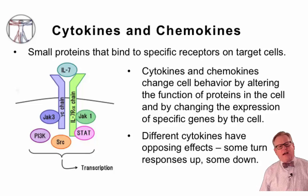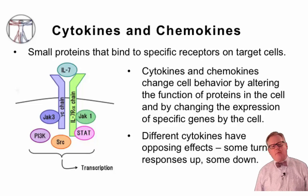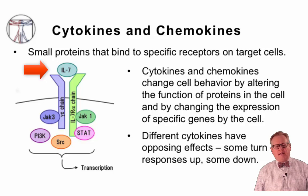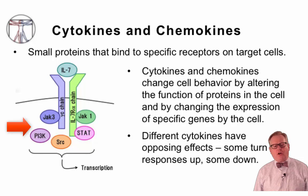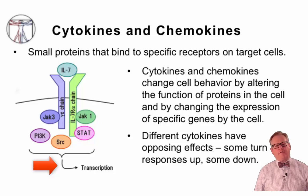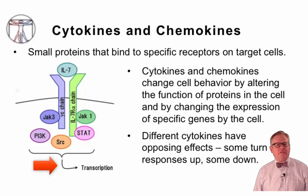What are cytokines and chemokines? These are small proteins that bind to specific receptors on target cells. As shown here to the left, the example of interleukin-7 binding to receptor chains in the membrane, sending signals to intracellular signaling molecules that ultimately lead to changes in gene transcription. This is how cytokines and chemokines work — they change cell behavior by altering the function of proteins in the cell and by changing the expression of specific genes in the cell.